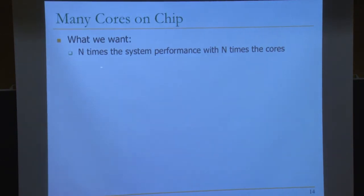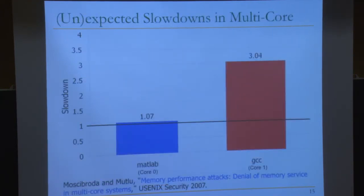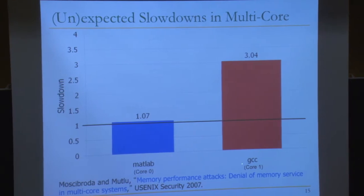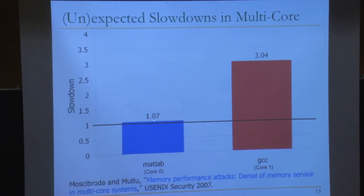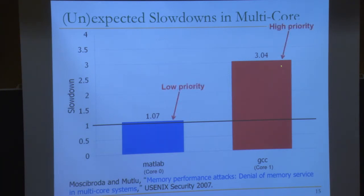We ran MATLAB and GCC together on a two-core system and measured the slowdown of each application compared to when it's run alone. MATLAB slows down by only 7%, while GCC slows down by almost 3x. As a result, you don't get n times the performance with a two-core system. What if GCC was important? If you assign high-priority GCC in the operating system, nothing changes, because those priorities are not communicated to the hardware.